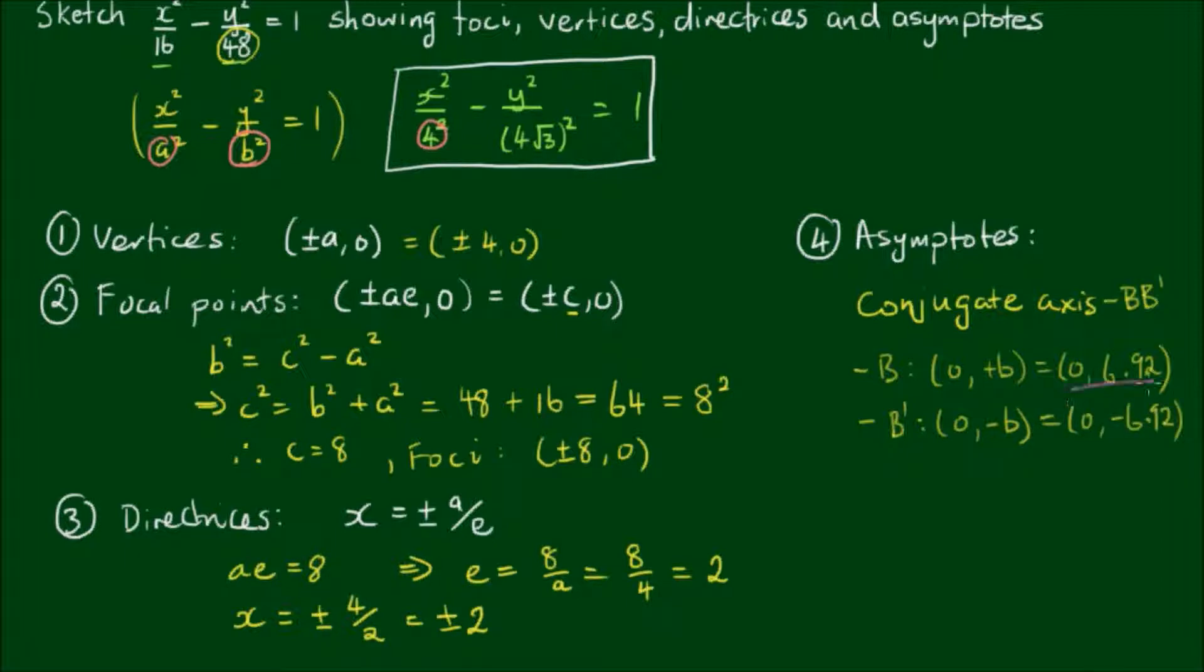And we can use these points along with the vertices as the outer edges of a rectangle in order to construct the asymptotes. And the equations of the asymptotes are given by y is equal to positive and negative b on a times x. Which is equal to positive and negative 4 times root 3 divided by 4 times x. So the asymptotes are given by positive and negative, the square root of 3 times x.